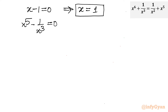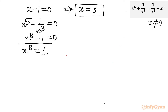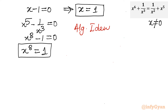Because x cannot be 0, I can multiply the second equation by x^3 to get x^8 - 1 = 0, or in other words x^8 = 1. Now there are two approaches to solve this equation: first using algebra and algebraic identities, and second using complex numbers. Let me proceed with Method 1 — algebraic identities.